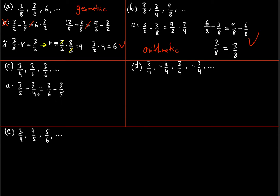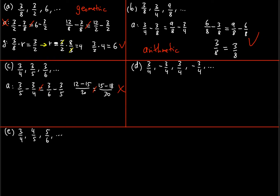For the left side, the least common multiple of 5 and 4 is 20. Multiplying each fraction accordingly: 3/4 becomes 15/20 and 3/5 becomes 12/20, giving 12/20 minus 15/20. For the right side, the LCM of 5 and 6 is 30: 3/5 becomes 18/30 and 3/6 becomes 15/30, giving 15/30 minus 18/30. The numerators are the same (−3) but the denominators are different — 20 versus 30 — so these are not equal. Not arithmetic.